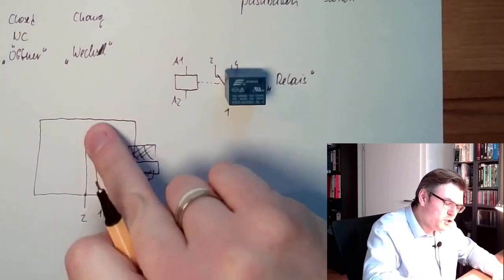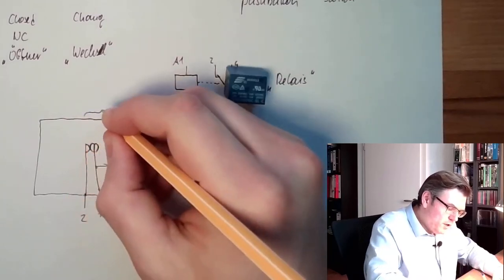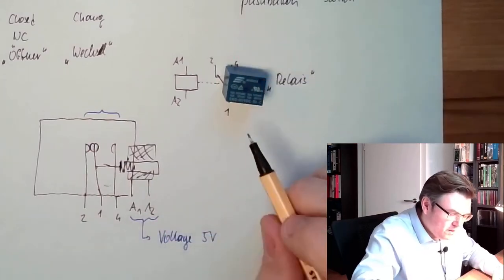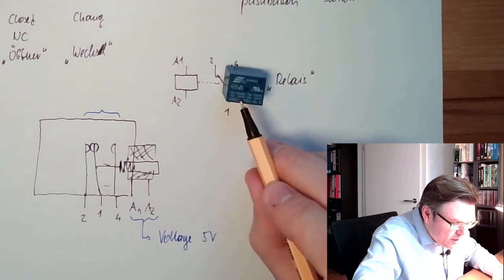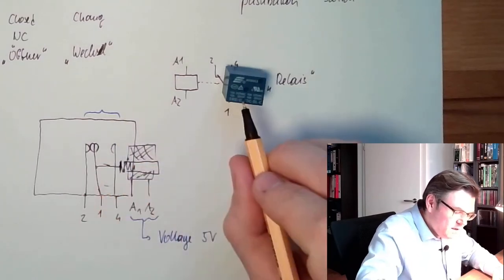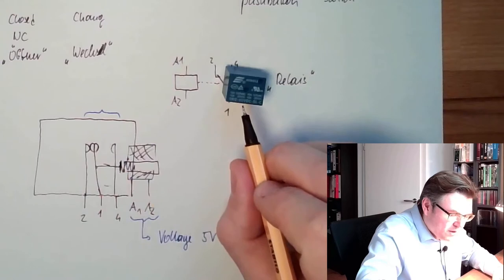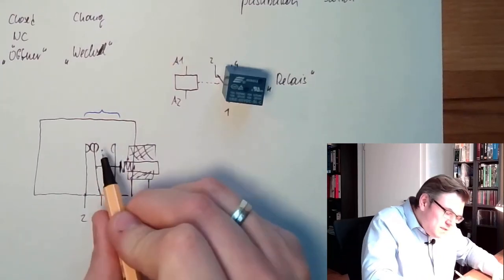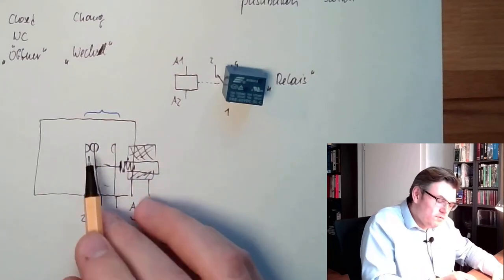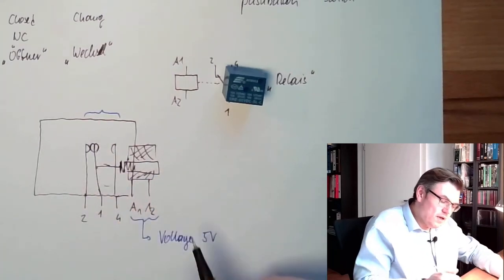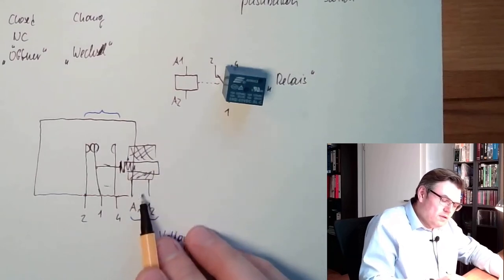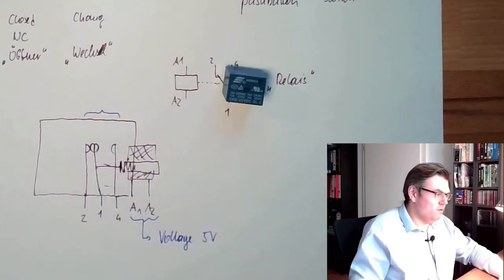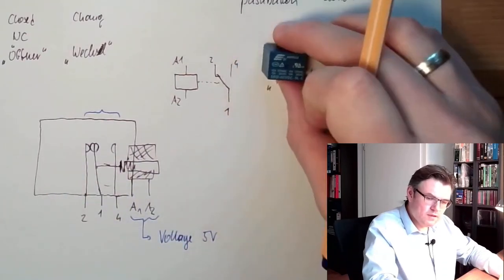And then there is the switching capability — how much power those contacts may switch: how much voltage and current. We can switch 250V AC and 10 amperes in this one, or 30V DC and also 10 amperes. This is the capability of the contacts. So there are two different things: the nominal voltage of the coil, and the capability of the contacts.